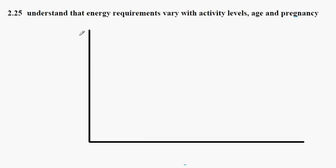On our graph here, the y-axis is a measure of the energy required by an individual per day, and we'll do this in kilojoules. So approximately we've got down here at 5,000 kilojoules, 10,000 kilojoules, and up here at 15,000 kilojoules.